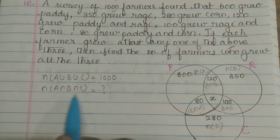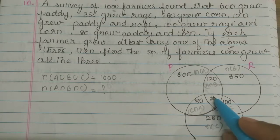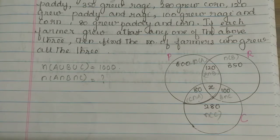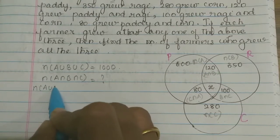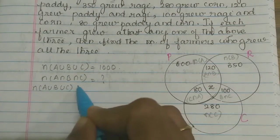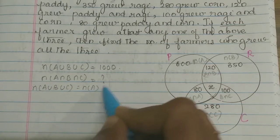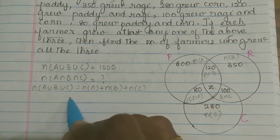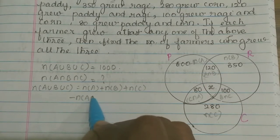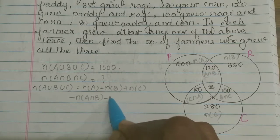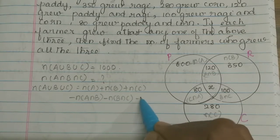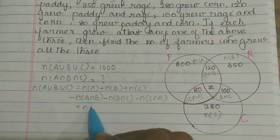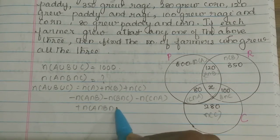We will use the formula to solve it. The formula is: n of A union B union C equals n of A plus n of B plus n of C, minus n of A intersection B, minus n of B intersection C, minus n of C intersection A, plus n of A intersection B intersection C.